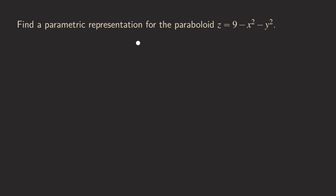Hello everyone, it's Wilson here. Today let's talk about finding a parametric representation or parametrization for paraboloids z equals 9 minus x squared minus y squared.